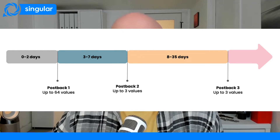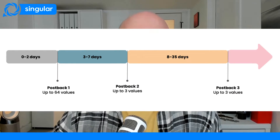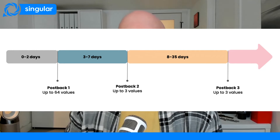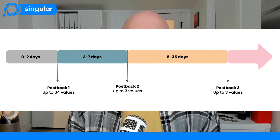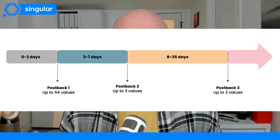Privacy thresholds are now crowd anonymity, and Apple set it up so that advertisers get more data and fewer empty conversion values. One postback is now three postbacks, providing more information over a longer period of time about the value of an ad campaign.